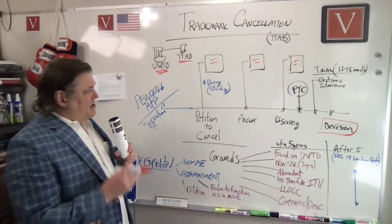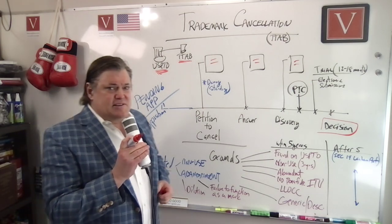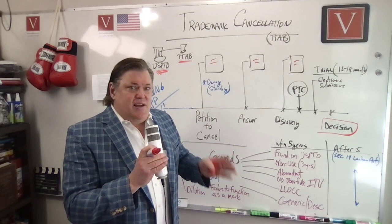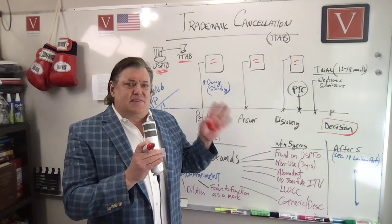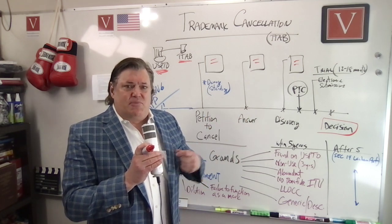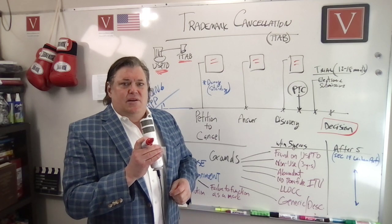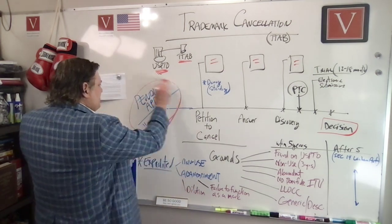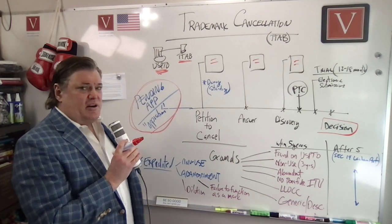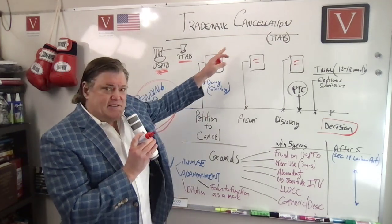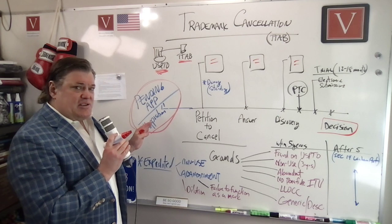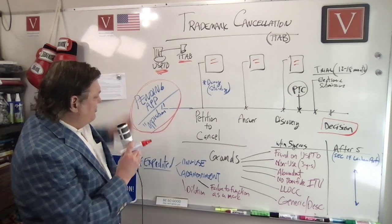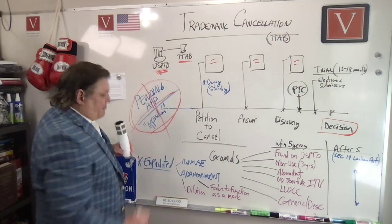There are two different things. One is if somebody has a pending application and you learn about it and say, 'Wait, that's conflicting with my brand, with our trademarks, with our rights' — there is an opposition proceeding. But this is separate from what we're talking about. We're talking about cancellation. Opposition is when you have a pending trademark and you want to oppose it. Different procedures — we're not going to talk about that further.